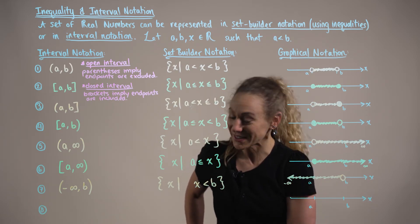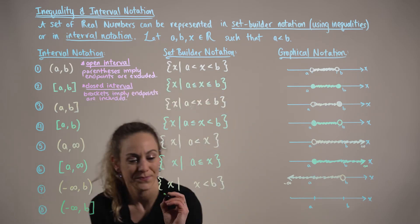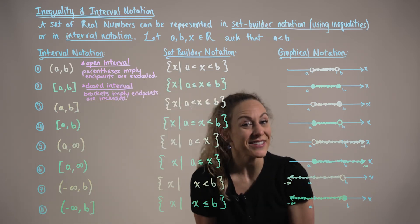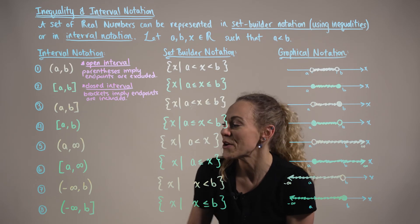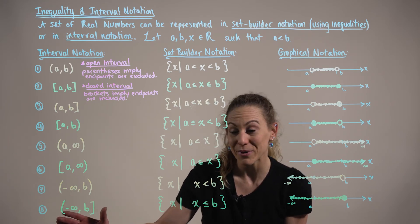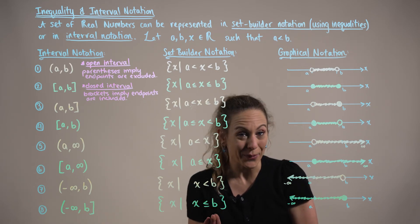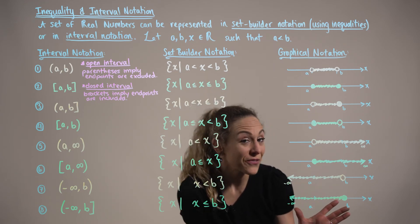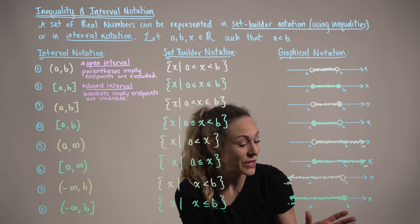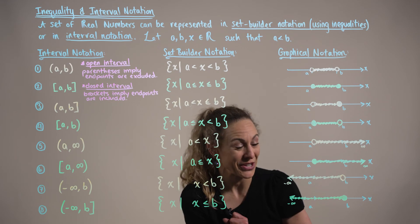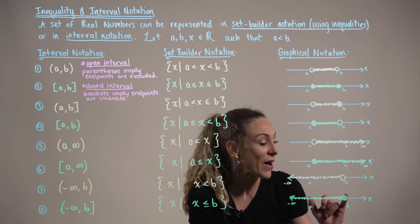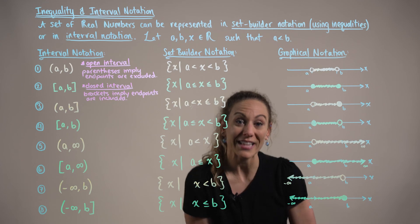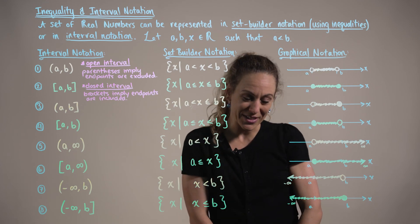Last but not least, in our final interval we have the set of all real numbers that are less than or equal to endpoint b. The only difference in graphical and set notation is that we now have a closed dot at endpoint b, implying that x can equal this value.